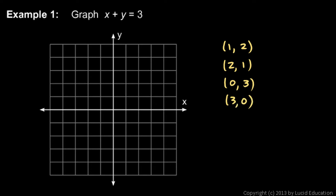Okay, let's plot those points. The point 1 comma 2 takes us from the origin. We go right 1 and up 2, so let's plot a point there. The point 2 comma 1 takes us to the right 2 and up 1. So plot a point there. The point 0 comma 3 is 0 in the x-direction and 3 in the y-direction. That's this point here. And the point 3 comma 0 takes us from the origin 3 to the right and 0 in the y-direction.